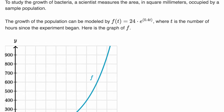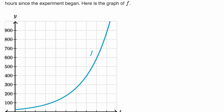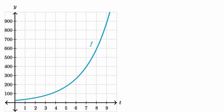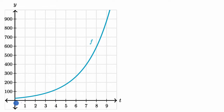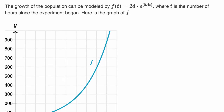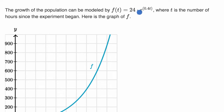Here we have the graph. We see how as time goes on, the square millimeters of our little bacterial population keeps growing, and it clearly is growing — it looks like it's growing exponentially. In fact, we know it's growing exponentially because it's an exponential function right over here.